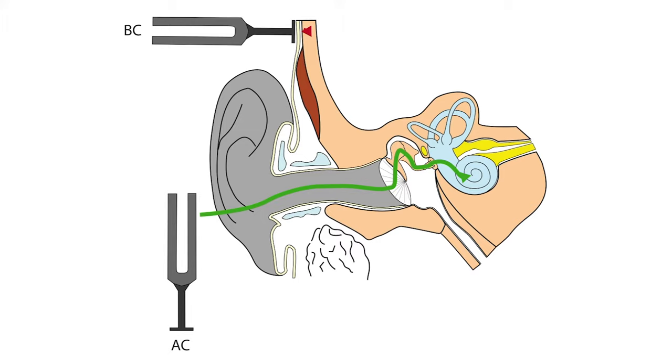During bone conduction however, sound misses the ossicles and there is direct vibration of the inner ear fluids with no amplification. If bone conduction is louder this suggests that there is a defect either preventing the sound's route to the cochlea or its amplification. This is a negative Rinne's test.